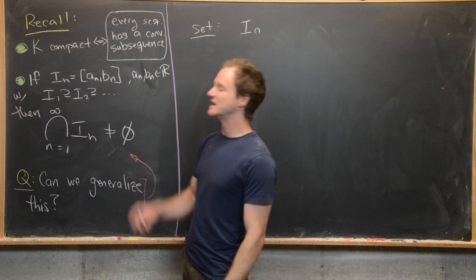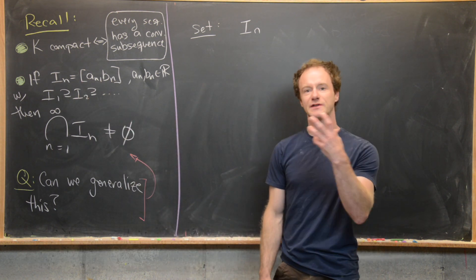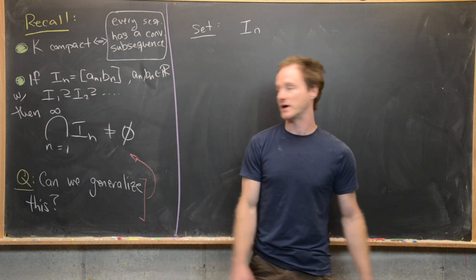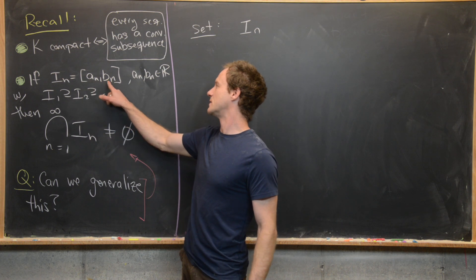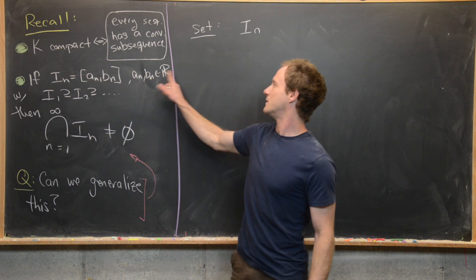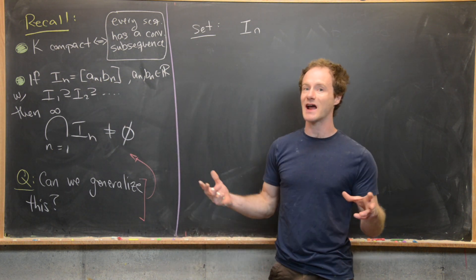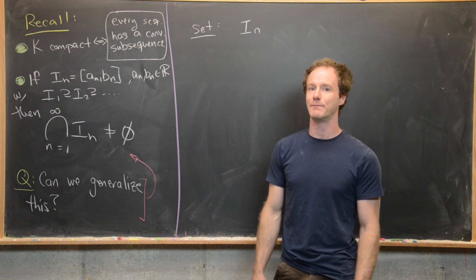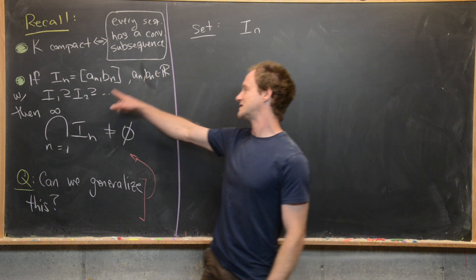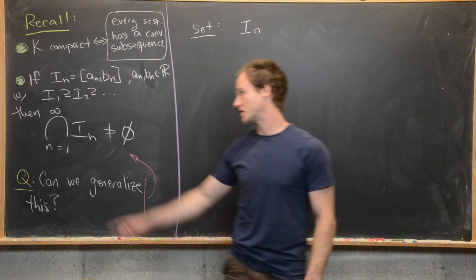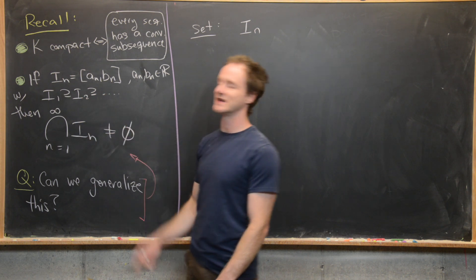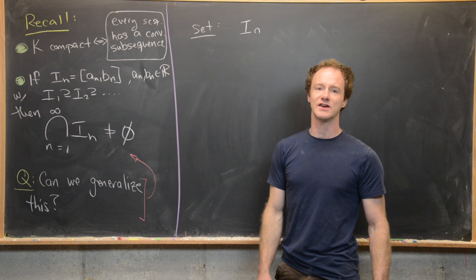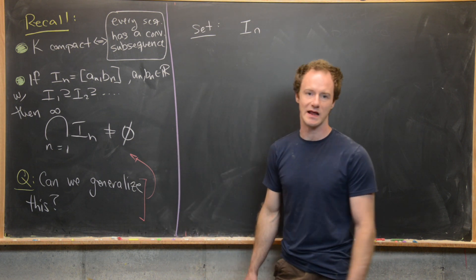So we've got this sequence of closed intervals, and what's very important here is that we're closed on both endpoints. So we have I_n equals [A_n, B_n] where A_n and B_n are real numbers — meaning neither of them are infinite. In other words this is a closed and bounded interval, and it satisfies this nesting condition: I_1 contains I_2, which contains I_3 and so on. Then the infinite intersection of these is non-empty.